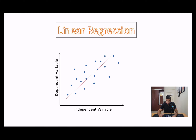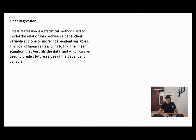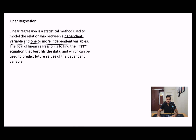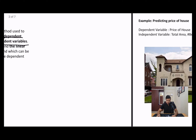So let's get started. Linear regression is basically a statistical method that is used to model a relationship between a dependent variable and one or more independent variables. The primary goal of linear regression is to find the linear equation that best fits the data, which can be used to predict future values of the dependent variable. So we want to find a relationship between the dependent and independent variables, and then use that relation in future to predict new dependent variables when given a new set of independent variables.